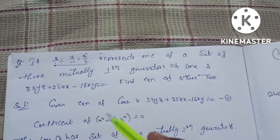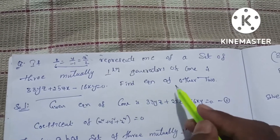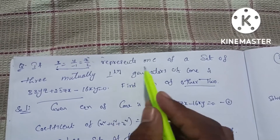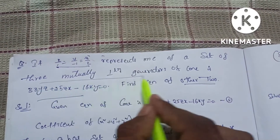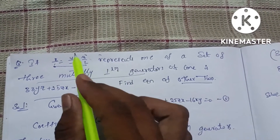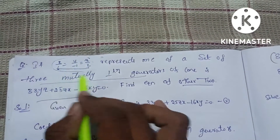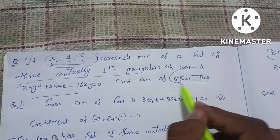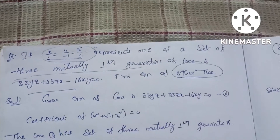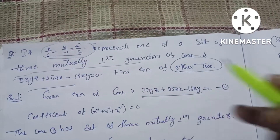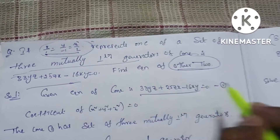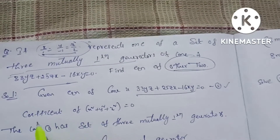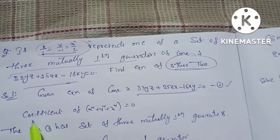If you have a generator equation, a cone equation, and two other equations — if you have a generator of three mutual perpendicular generators, you will have one generator, so there are two remaining. Those remaining two will be cut. So if you have a given equation of the cone, the condition is mutual perpendicularity.